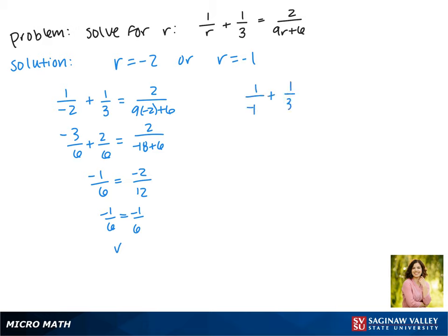Now we have to do the same thing with negative 1 and plug it back in everywhere we see an r. That 1 divided by negative 1 is just a negative 1, and then we get 2 over negative 9 plus 6.